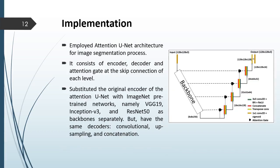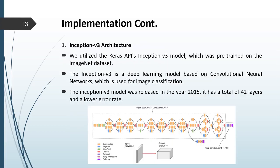Moving on to the implementation of this study, we employ the attention U-Net architecture for image segmentation. It consists of an encoder, decoder, and attention gate at the skip connection of each level. We substituted the original encoder of the attention U-Net with ImageNet pre-trained networks — namely VGG-19, Inception-V3 and ResNet-50 — as backbones separately, while keeping the same decoder with convolutional, upsampling and concatenation layers. Three CNN architectures were employed: Inception-V3, VGG-19 and ResNet-50.